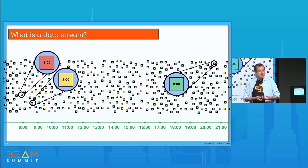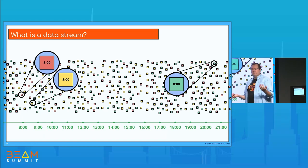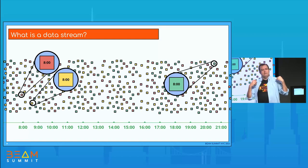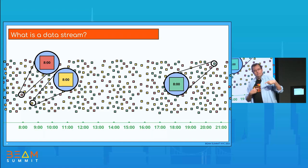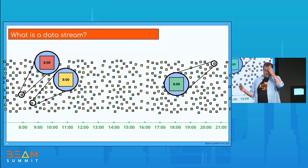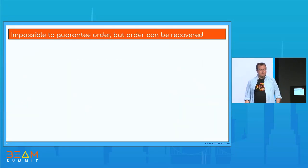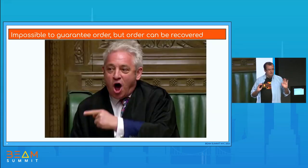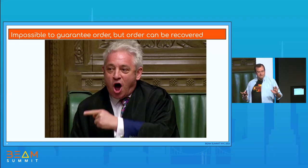Some message queues like Pub/Sub promise to deliver messages in the same order in which they receive them. But how the message gets from the message queue to your pipeline, or from the real world to the message queue — well, it's impossible to guarantee order there. So even if ordering is fulfilled in the queue, you're going to see data out of order. It's impossible to guarantee order, but we can recover order somehow. So let's maintain order and keep going.